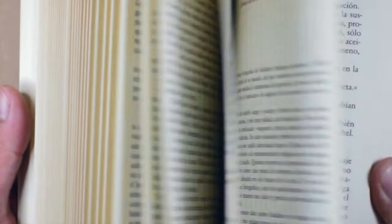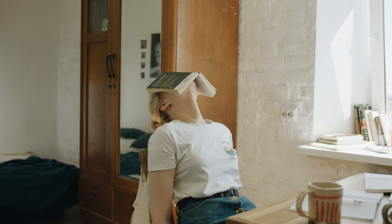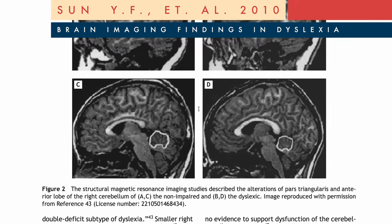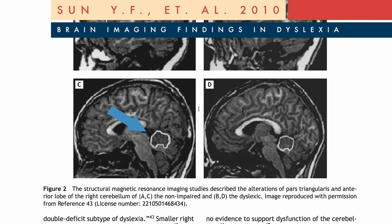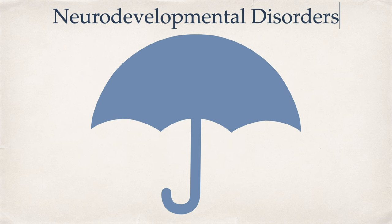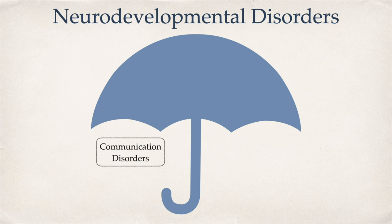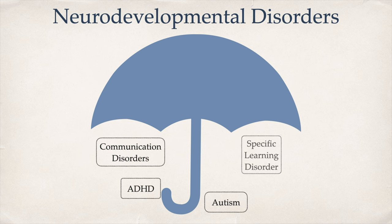A specific learning disorder falls under the category of a neurodevelopmental disorder. This means that brain function and also the development and growth of the brain is affected. For example, if we compare the brain structure of a non-dyslexic with a dyslexic, you can actually tell the difference. Neurodevelopmental disorders is the umbrella category, and underneath you find conditions like communication disorders, ADHD, autism, and also specific learning disorder.